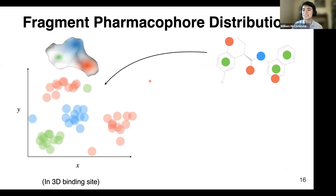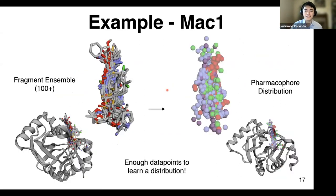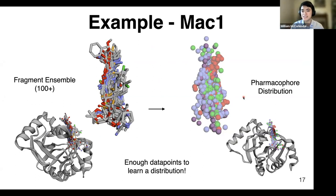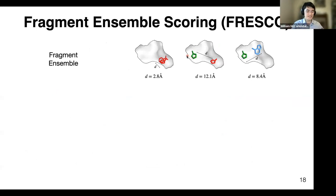Distribution learning won't work without enough data, so is there enough? This is where the new technology helps. For mac1, a recent fragment screen yielded over a hundred bound structures, and each molecule contains multiple pharmacophores. Converting those structures into pharmacophores gives a very dense, information-rich point cloud that's sufficient for distribution learning. As technology improves, we'll only get more data, so this is a worthwhile approach.